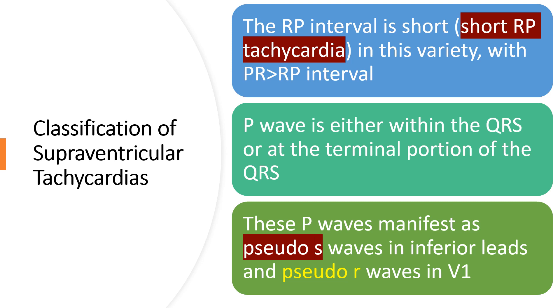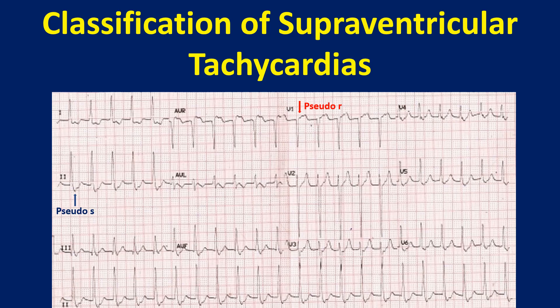The P wave is either within the QRS or at the terminal portion of the QRS. These P waves manifest as pseudo-S waves in inferior leads and pseudo-R waves in V1, making it a short RP tachycardia with pseudo-S in inferior leads and pseudo-R in V1.